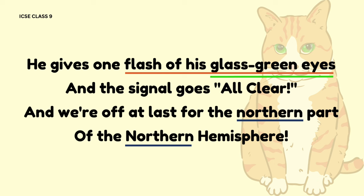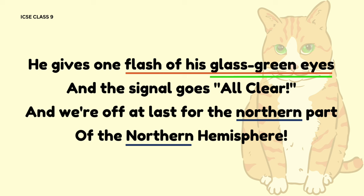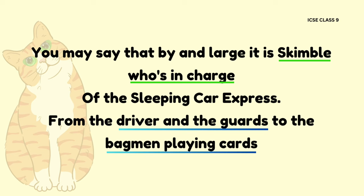He gives one flash of his glass-green eyes and the signal goes all clear, and we're off at last for the northern part of the northern hemisphere. In line 13, 'the flash of his glass-green eyes' is an example of a metaphor since the poet uses metaphorical language to describe Skimble Shanks' commanding presence. However, 'glass-green eyes' is visually descriptive and therefore considered imagery. The word 'northern' is repeated in lines 15 and 16 — 'the northern part of the northern hemisphere' — to create a rhythmic pattern and emphasize the destination of the Nightmail.